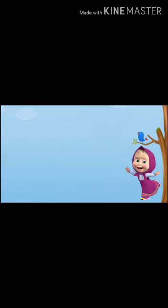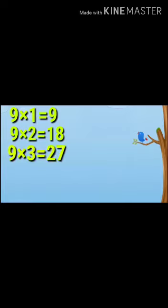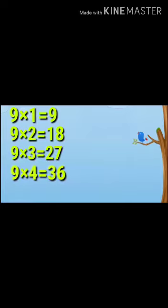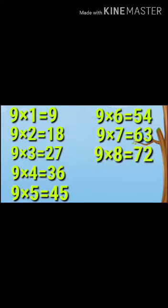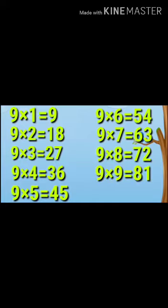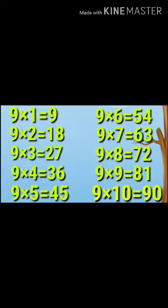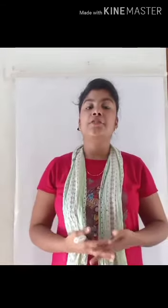9 1's are 9, 9 2's are 18, 9 3's are 27, 9 4's are 36, 9 5's are 45, 9 6's are 54, 9 7's are 63, 9 8's are 72, 9 10's are 90.